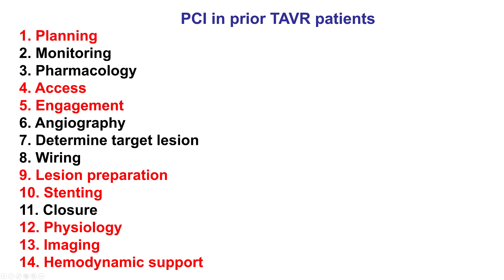In summary, several steps of angiography and PCI can be affected in TAVR patients, with coronary engagement being the most affected. Understanding the potential challenges and using various techniques — such as using a guidewire as a rail or using a guide extension — can help engage the coronary arteries and allow a successful angiogram and PCI. Thank you.